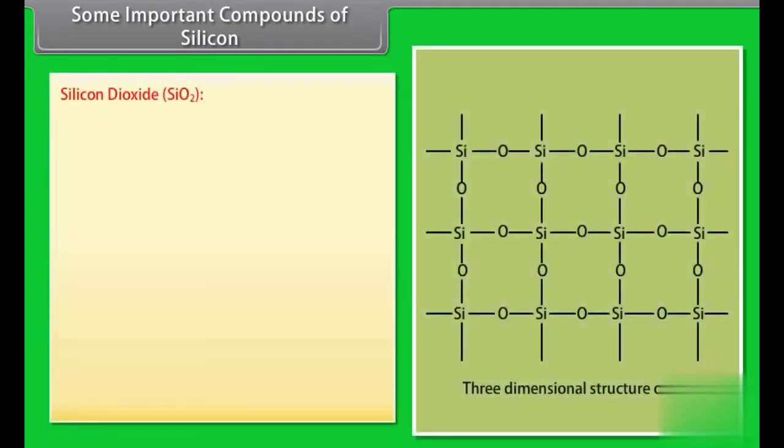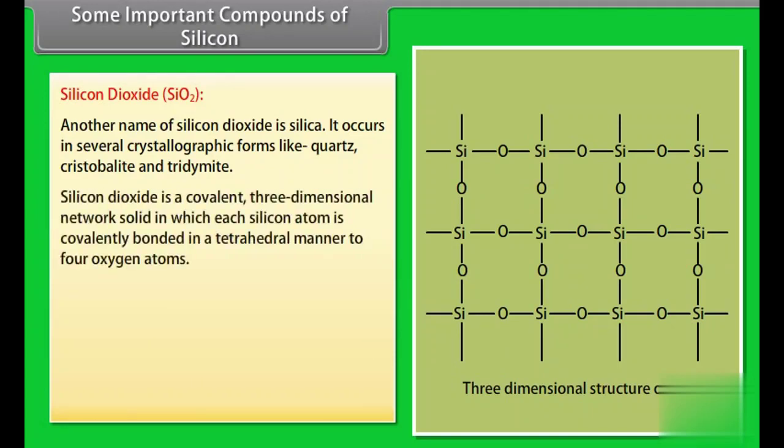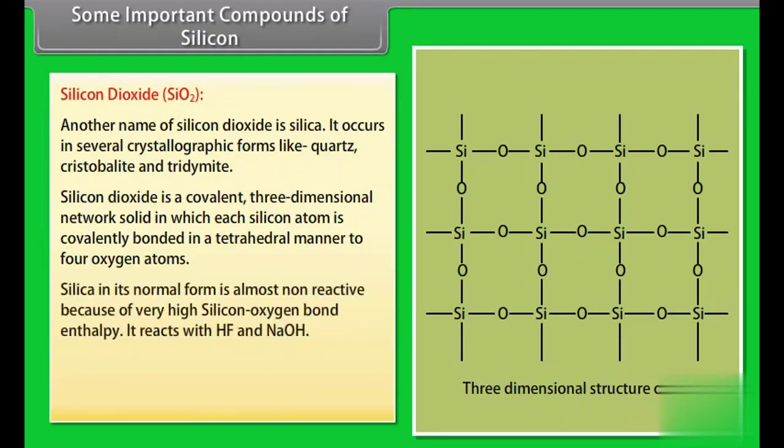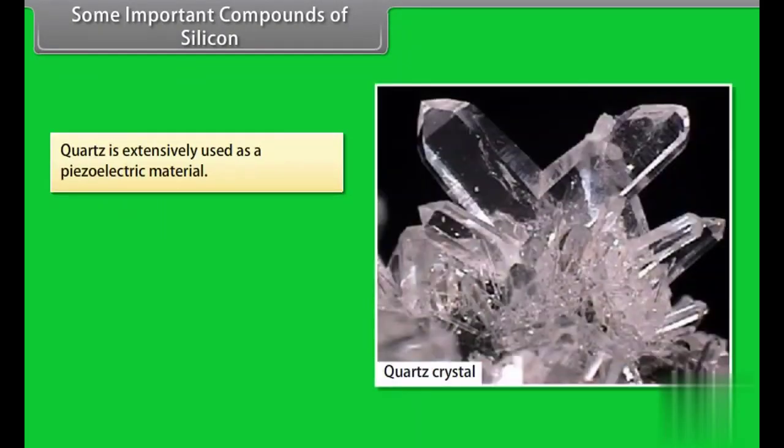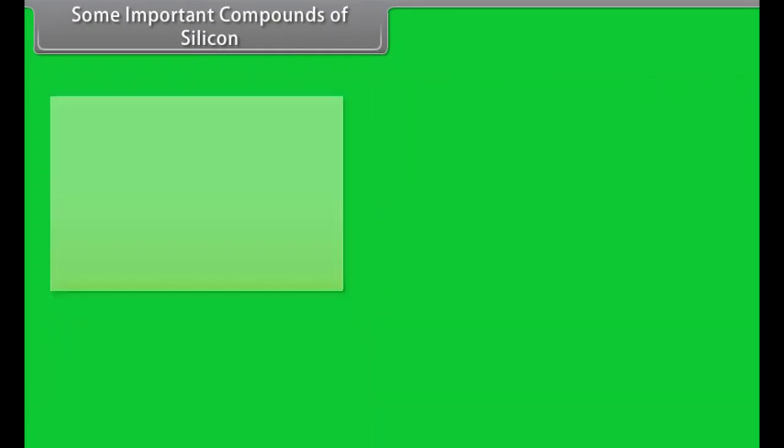Some important compounds of silicon. Silicon dioxide. Another name of silicon dioxide is silica. It occurs in several crystallographic forms like quartz, cristobalite and tridymite. Silicon dioxide is a covalent three-dimensional network solid in which each silicon atom is covalently bonded in a tetrahedral manner to four oxygen atoms. Silica in its normal form is almost non-reactive because of very high silicon-oxygen bond enthalpy. It reacts with HF and NaOH. Quartz is extensively used as piezoelectric material. Silica gel is used as drying agent and as a catalyst.